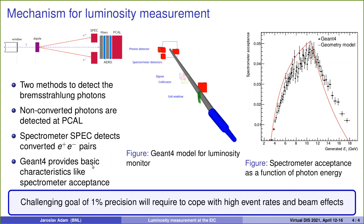We have a simulation model to address basic characteristics of the luminosity monitor, like the acceptance of the pair spectrometer to bremsstrahlung photons as they convert on the exit window as a function of photon energy. This shows that it can be tuned to start at relatively large photon energies well above possible background from synchrotron radiation.